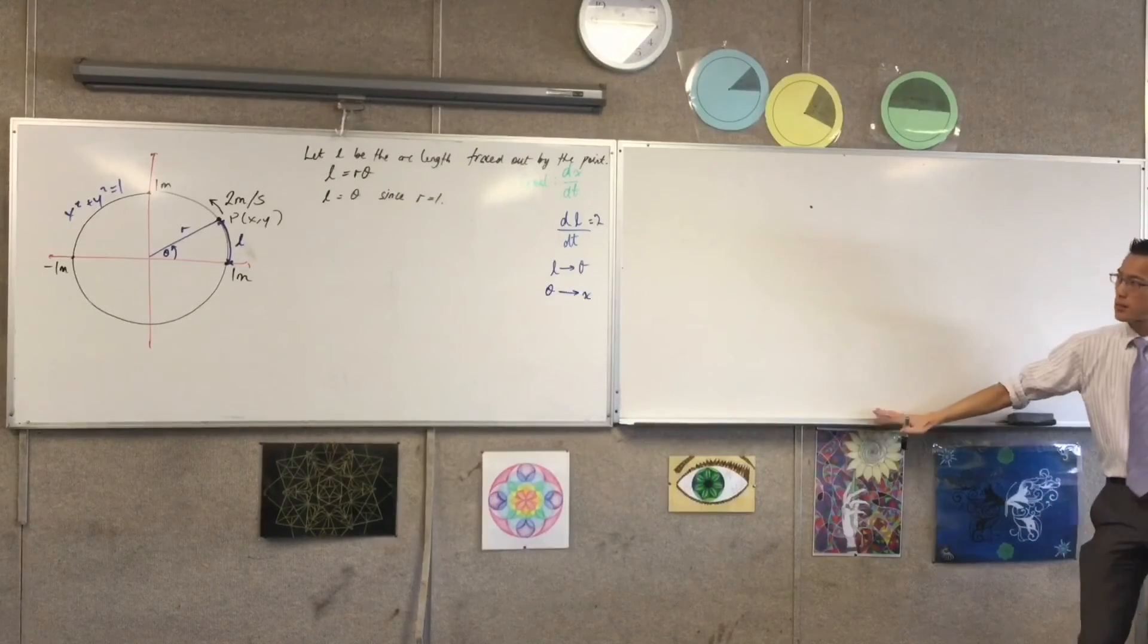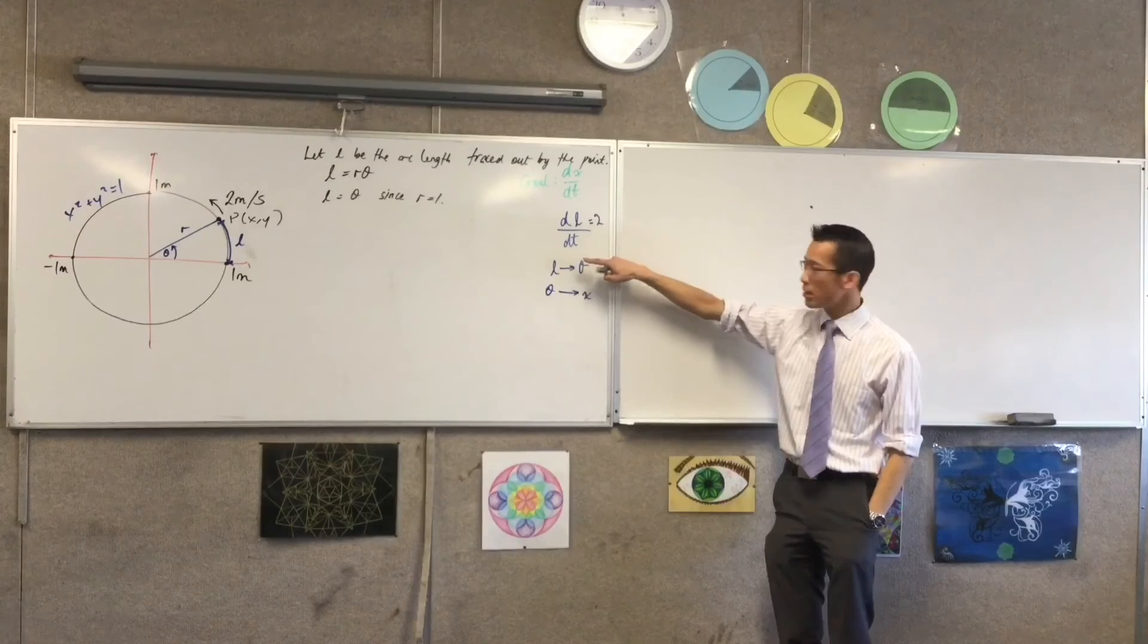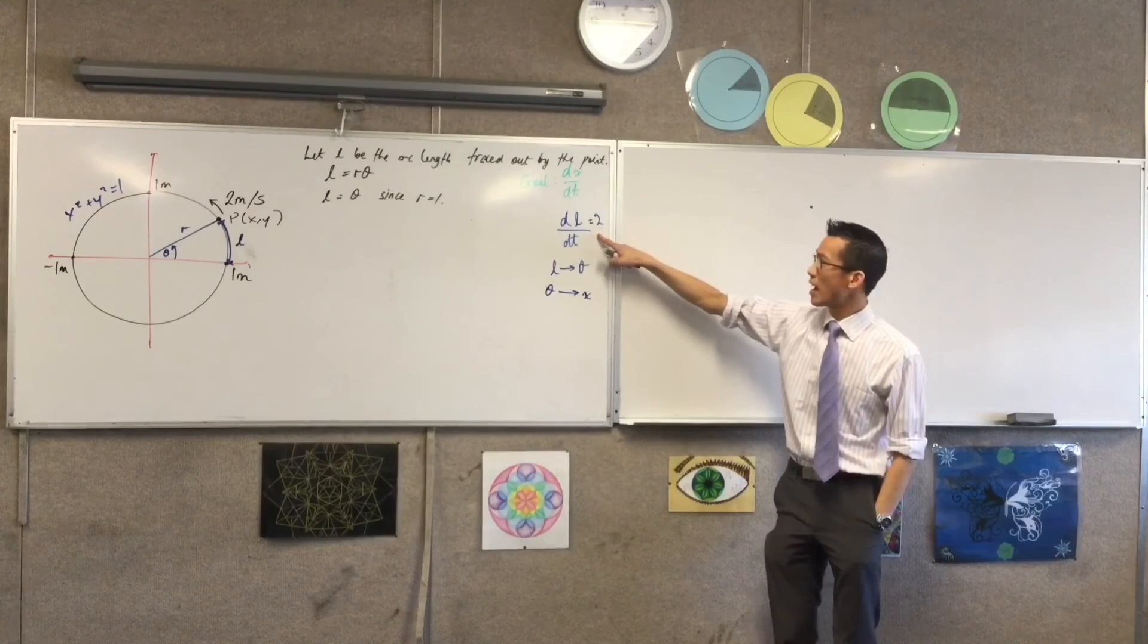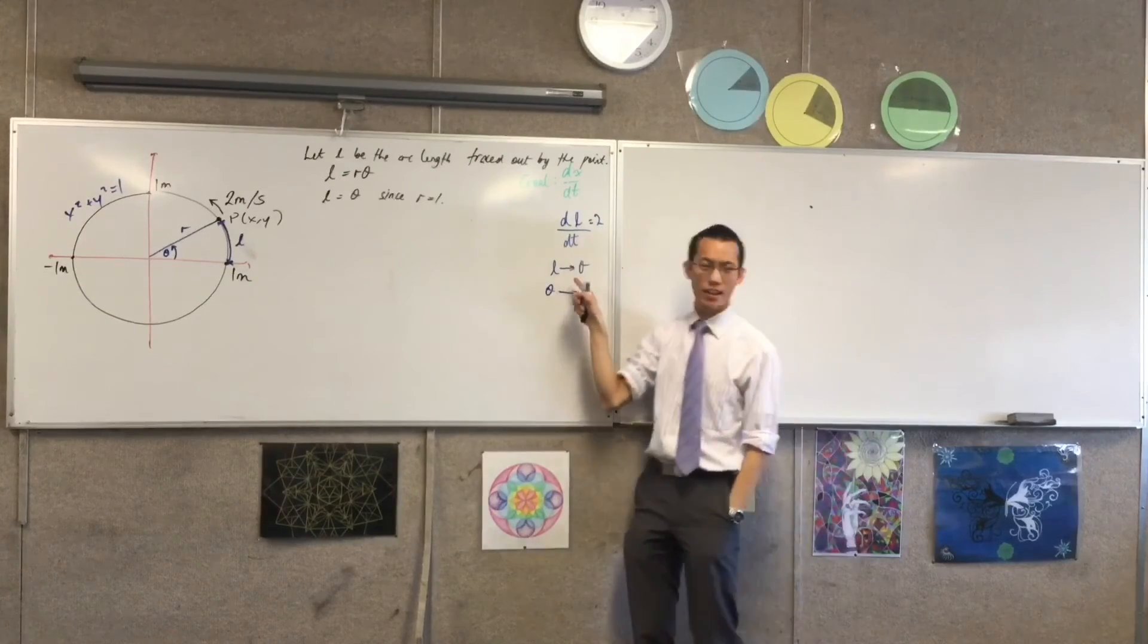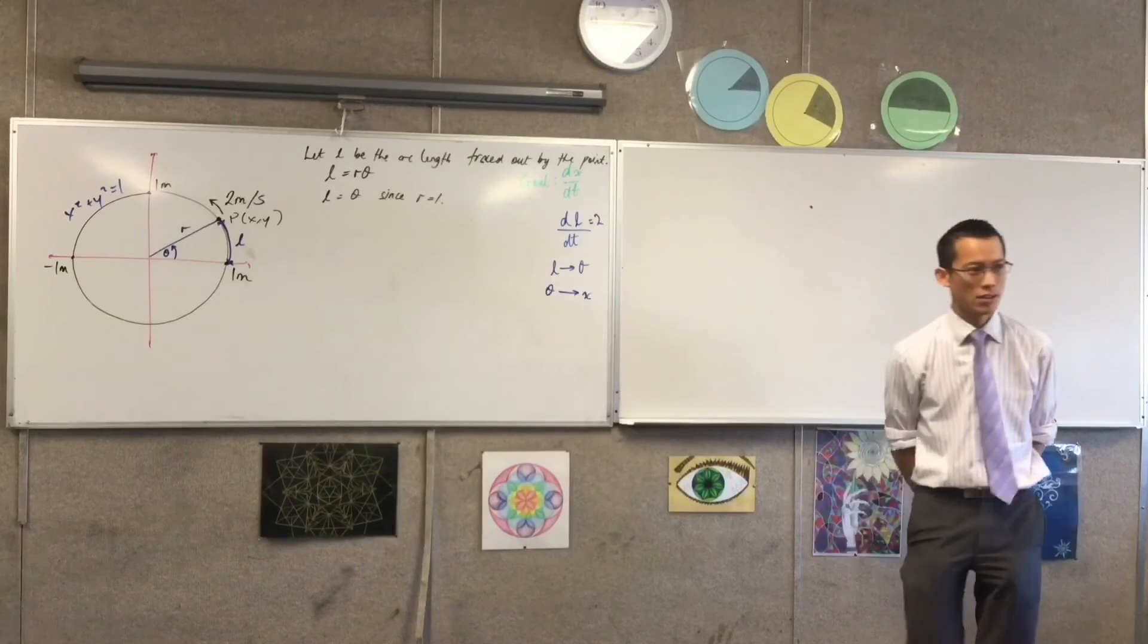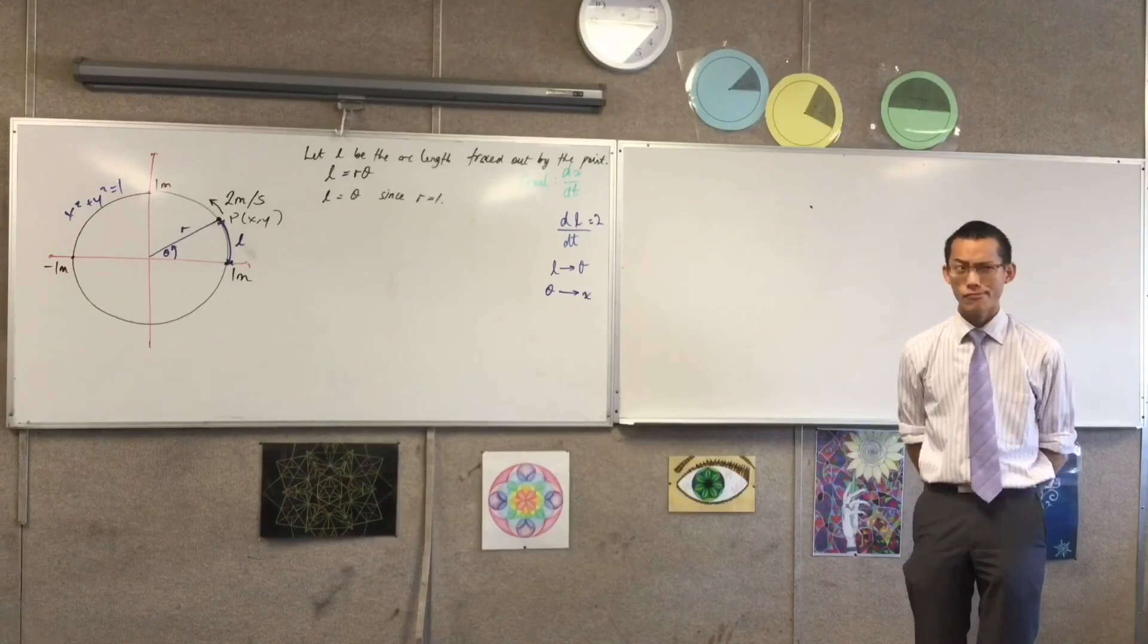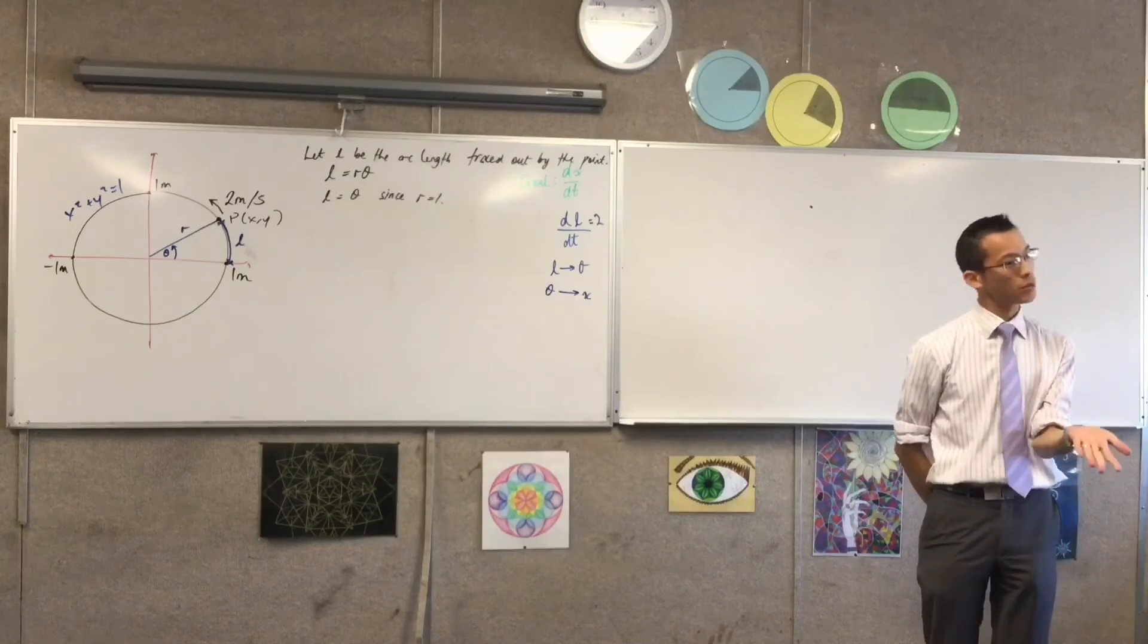Now, how do I use this? I know dL/dt, that was given to me in the question, and I want to get to dx/dt. So, how am I going to use this and hop onto my L to theta bridge? What am I going to do? L and theta, apparently, are always equal to each other, right?